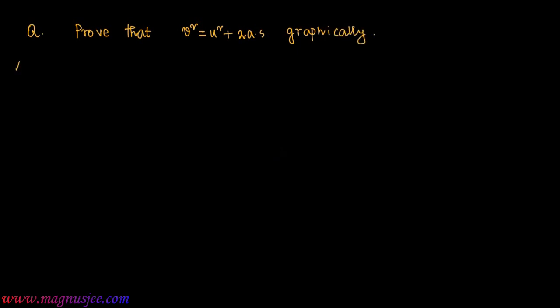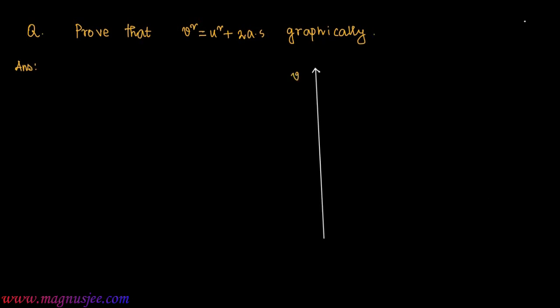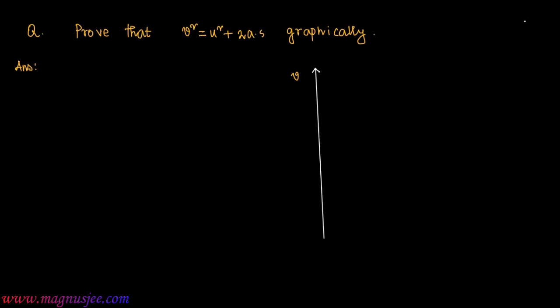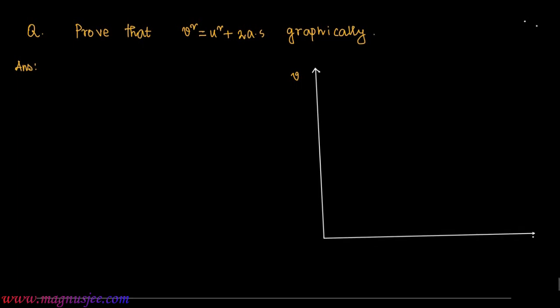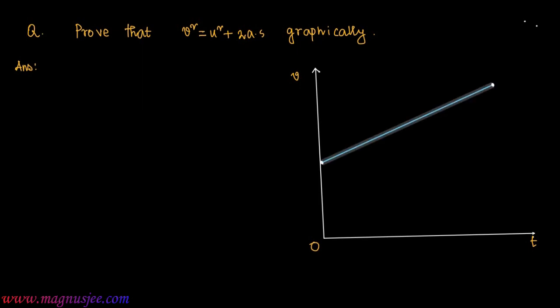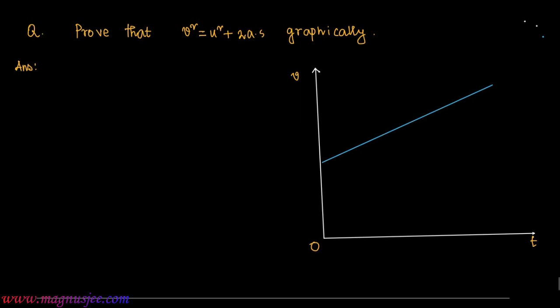For that we have to draw a velocity-time graph. The vertical axis is the velocity axis and in the horizontal direction the time axis is plotted. This oblique straight line AB is the velocity-time graph of a body moving with uniform acceleration.